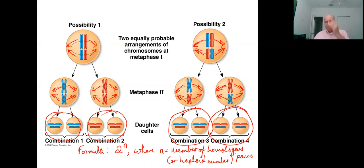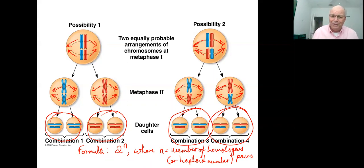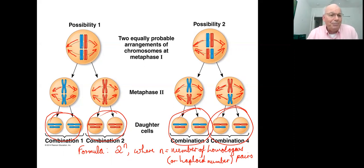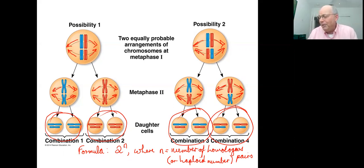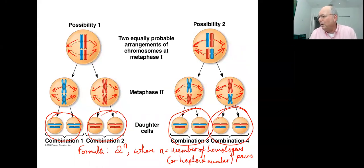The letter n actually comes from the haploid number — remember we use 2n and n for diploid and haploid. For the cell shown here with two pairs of chromosomes, its haploid number is two, which is also the number of pairs. Applying the formula: 2 to the power 2 equals four — and there are our four possible combinations.